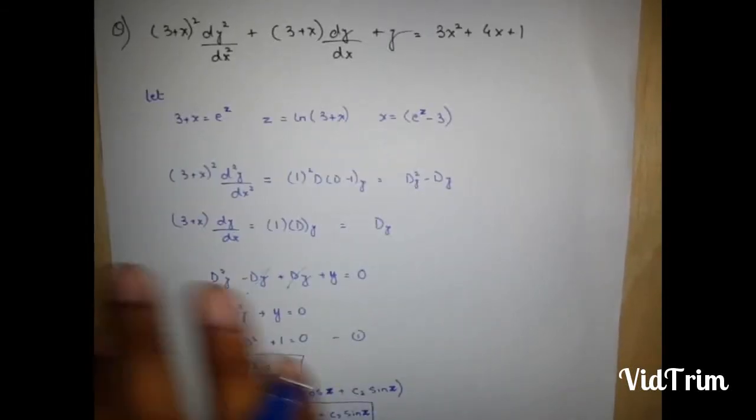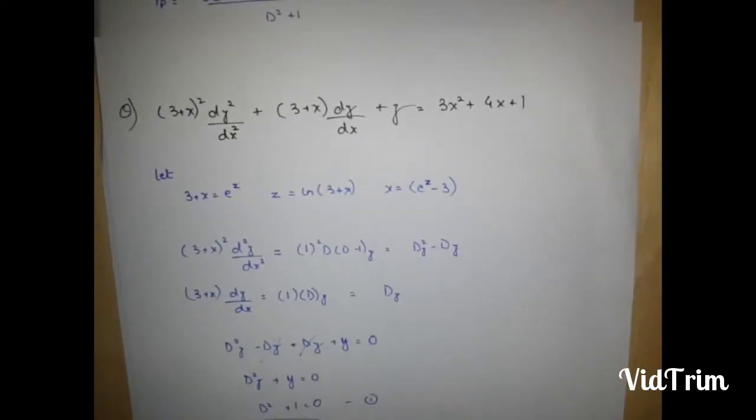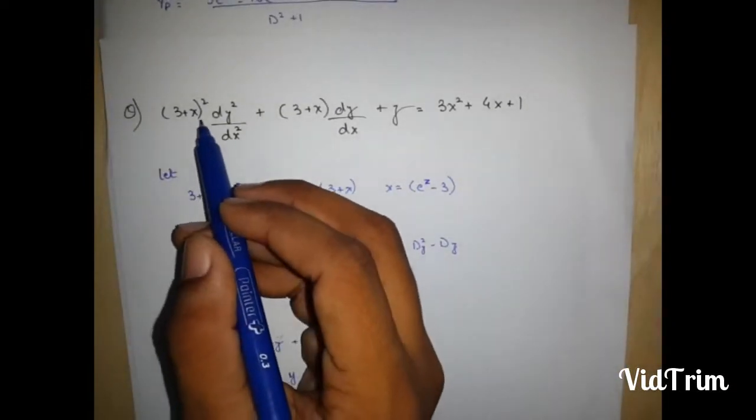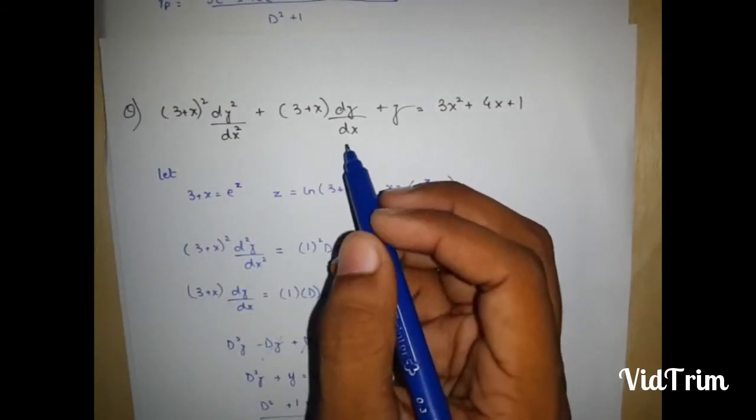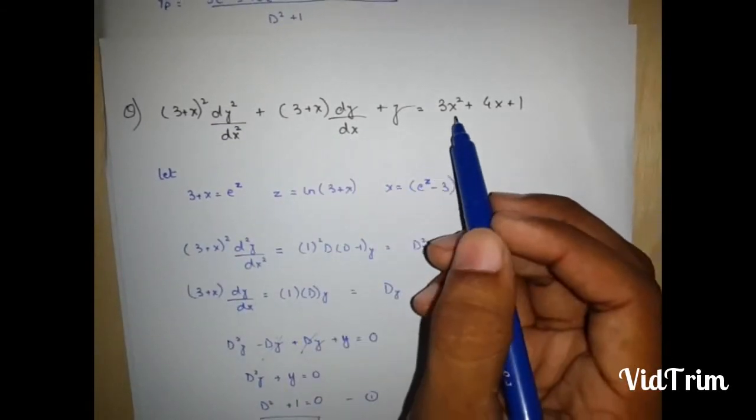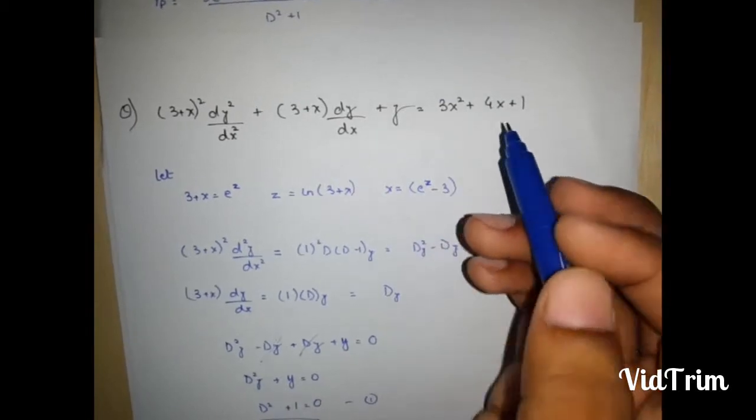Let's see our question, which is 3 plus x square d y square upon dx square plus 3 plus x dy upon dx plus y is equal to 3x square plus 4x plus 1.